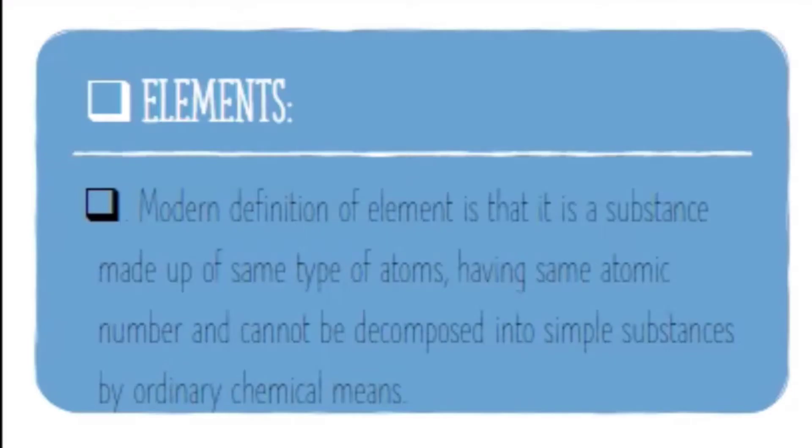So what are elements? An element is a substance made up of the same type of atoms. The same atoms have the same atomic number, which means the atom contains the same number of protons, electrons, and neutrons.